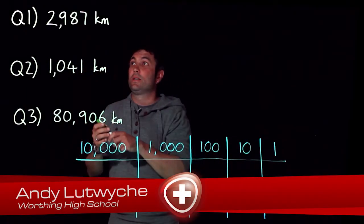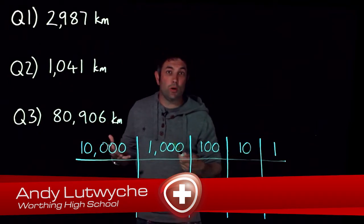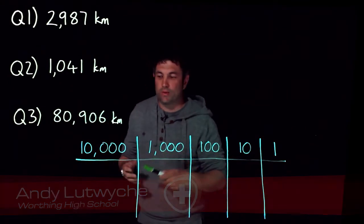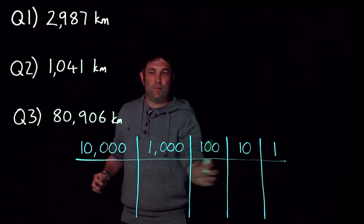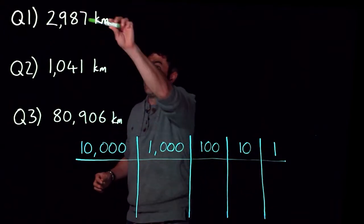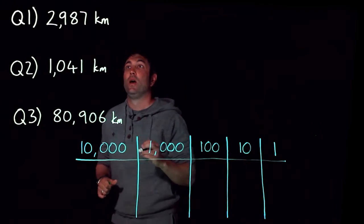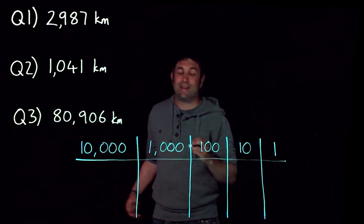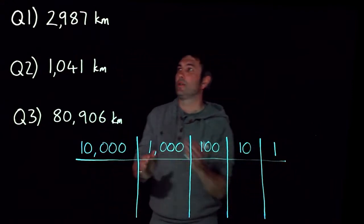We're looking to write these distances in actual words, because occasionally you might have to write them down. I've done a little table in blue down here, and I'm going to write these numbers in there. First of all, I'm going to do 2,987.